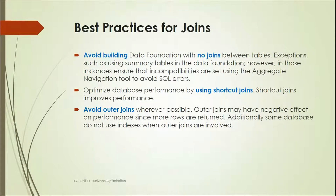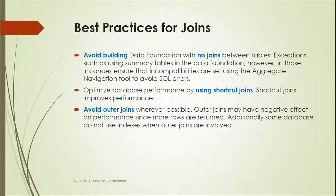Best practices for joins in the data foundation: avoid building a data foundation with no joins — do not keep standalone tables; join every table with other tables wherever possible. Optimize database performance by using shortcut joins where required, as they can improve performance. Avoid outer joins wherever possible because they have a negative impact on performance since outer joins return more data rows, and if no indexes exist in the database, outer joins become an even bigger problem.